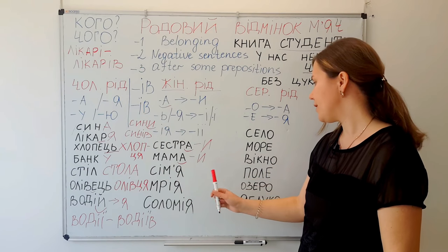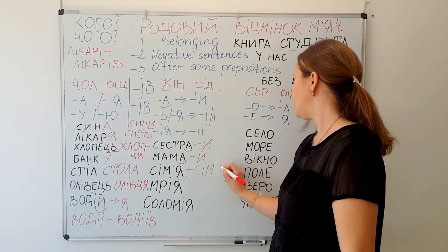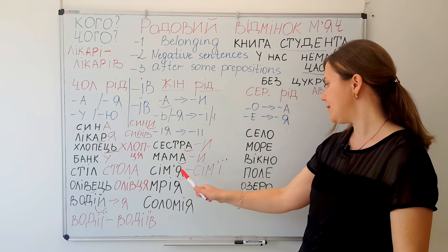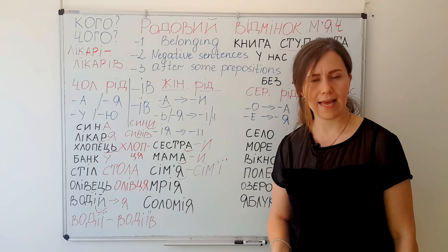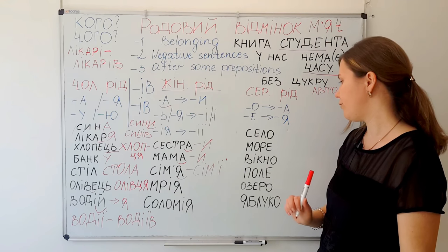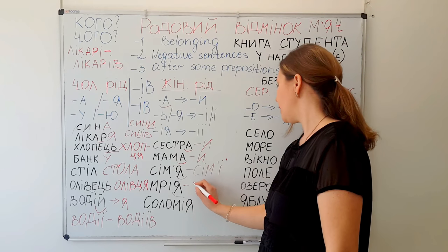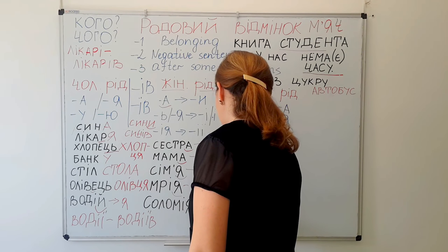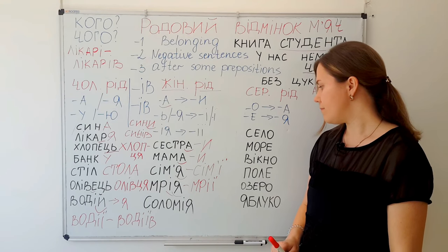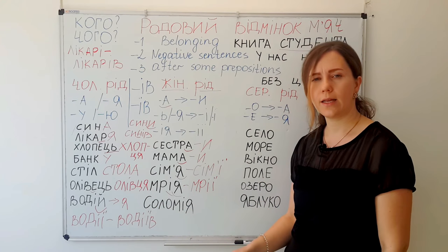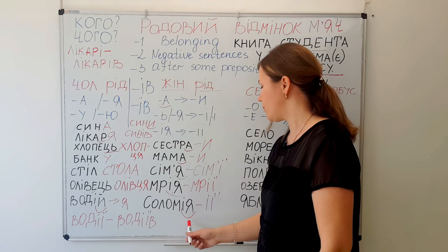Next: сім'я — 'a family.' Here we have the ending Я which changes to І: сім'ї. Без сім'ї — 'without a family.' У нас немає сім'ї. Next: мрія — 'a dream.' The genitive form is мрії — Я changes to ЇЇ. And Соломія — a name — becomes соломії in the genitive case. Без соломії.